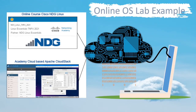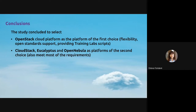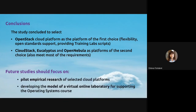We expanded the content of the course with tasks that students perform in Apache CloudStack, relating to learning graphical interfaces, multitasking, multi-user mode, and scripting. In conclusion, since all analyzed platforms conform to the requirements, we currently selected OpenStack as the platform of first choice because of its high flexibility, conformance with open standards, and its training lab scripts for beginners. At the same time, the other three platforms — CloudStack, Eucalyptus, and OpenNebula — also look promising and meet most of the requirements, so they have been selected as platforms of second choice. Future studies should focus on pilot empirical research on the selected cloud platforms and on developing the model of a virtual online laboratory for supporting the OS course.